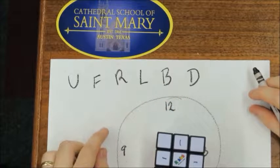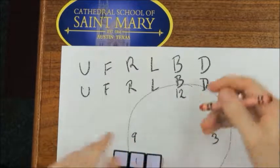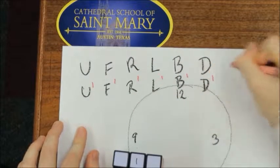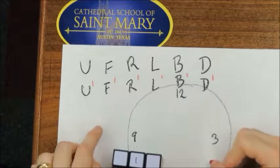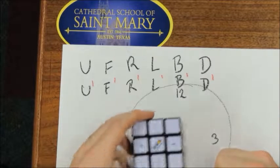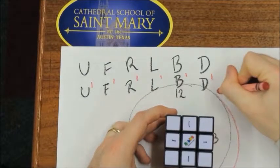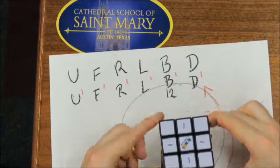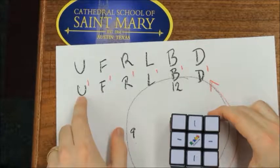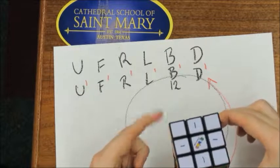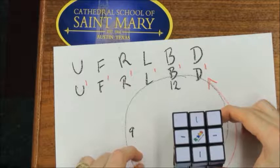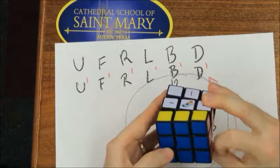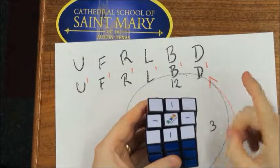So those are the six letters you will see. You will also see apostrophes next to those letters — the apostrophe means to turn that side counterclockwise. For example, U' means up inverted, and F means to do the front clockwise. You only do one turn per letter.